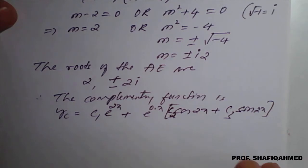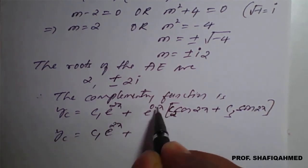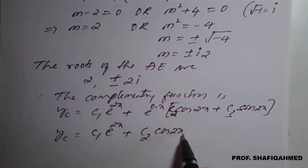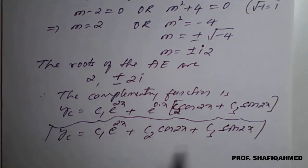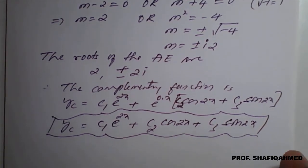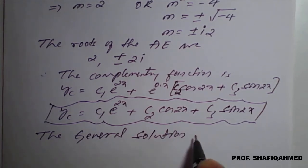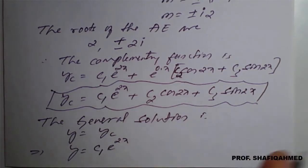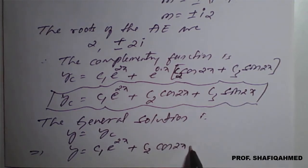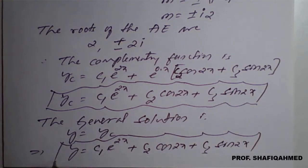Therefore the complementary function is yc = c₁e^(2x) + c₂cos(2x) + c₃sin(2x). Since this is a homogeneous equation, the general solution y equals yc, that is: y = c₁e^(2x) + c₂cos(2x) + c₃sin(2x).